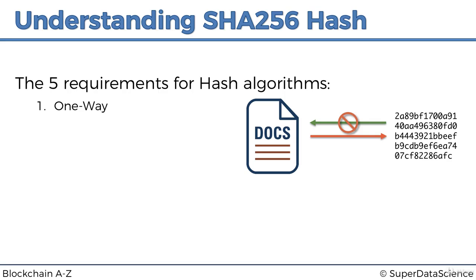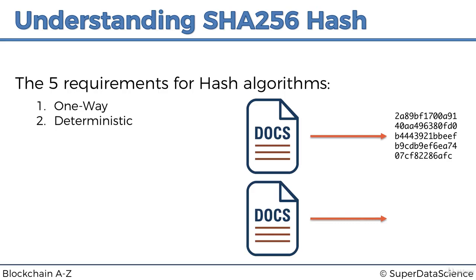Just like a human fingerprint — if you have the fingerprint you cannot restore what the person looks like, their eye color, or anything else — but if you have the person you can always get their fingerprint. It only works one way. Requirement two: it has to be deterministic, meaning if you take the exact same document and apply the hash algorithm again later, you'll get exactly the same result, as we saw in the demonstration.